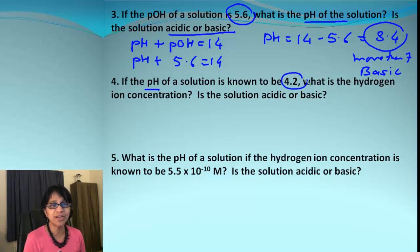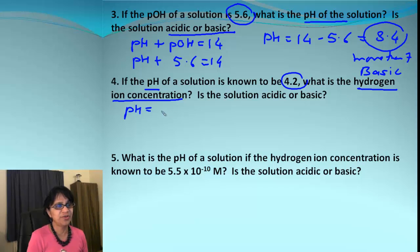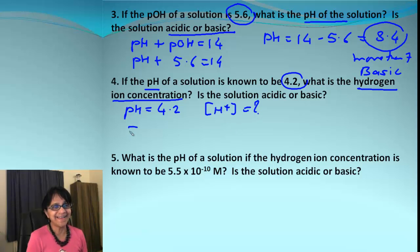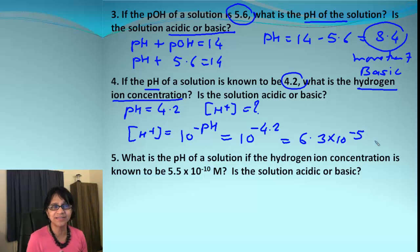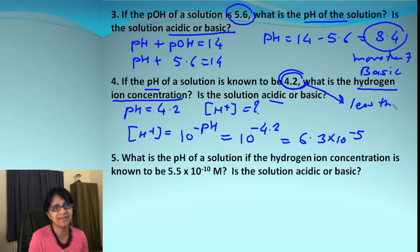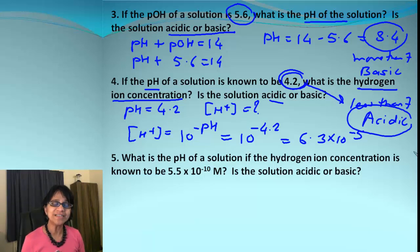Problem 4: pH is given as 4.2 and we need to find the hydrogen ion concentration. Using [H⁺] = 10^(−pH), we calculate 10^(−4.2) = 6.3×10⁻⁵. To determine acidic or basic, we simply look at the pH value — 4.2 is less than 7, so it is acidic.